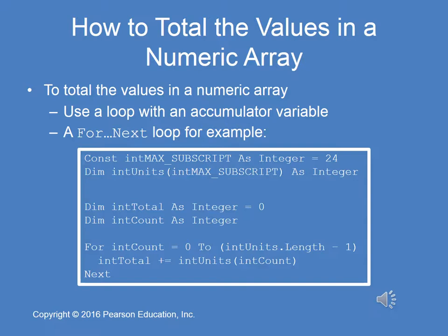We declare a constant for the maximum subscript and set it to 24. We declare an array called int units, and int max subscript is used to specify 24 as its maximum subscript. Then we declare int total — that's our accumulator variable — as an integer, and we initialize it to zero because the first time we use it, we'll try to add a value to it. We declare a counter called int count, then go into the for loop: for int count equals zero to int units.length minus one, and int total plus equals int units(int count).